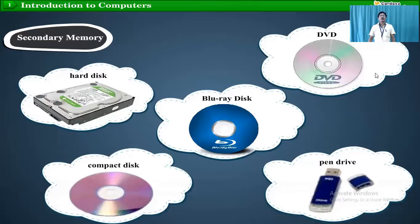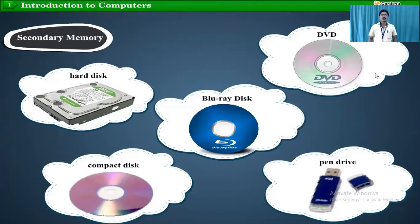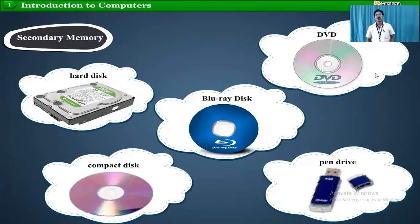Secondary memory allows us to store data permanently. When the power goes off, the data does not vanish — it will still be there. When you start your computer again, that data will be present on the hard disk, compact disk, Blu-ray disk, DVD, or pen drive.